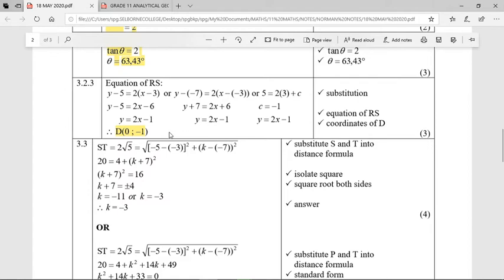The only unknown in this line here is then the k, the y value of T. What we could do is square both sides. If we square the root sign, a root times a square sign is gone. If we square 2 root 5, the square of 2 root 5 will be 4 times 5, which is 20. Negative 5 minus minus 3 would give you negative 2, and if I square it, I get 4. Then k plus 7 all squared is over there. So if I subtract the 4 across, I get 16.